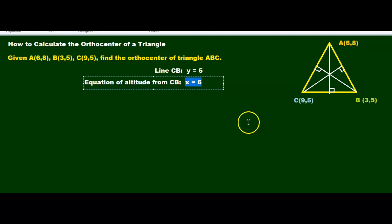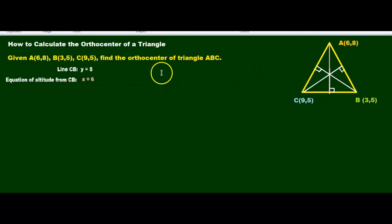I'm going to use a slightly different color there. I've color-coded my altitude. The pink line is equation X equals 6. The next thing we need to do is find one of the other altitudes. I'm going to just use the blue one.